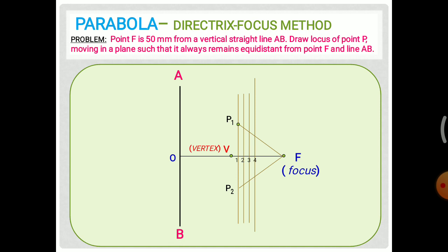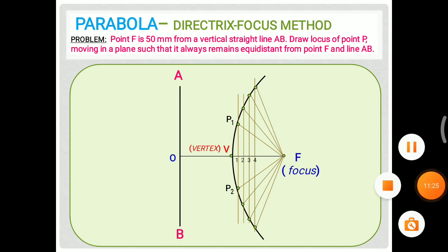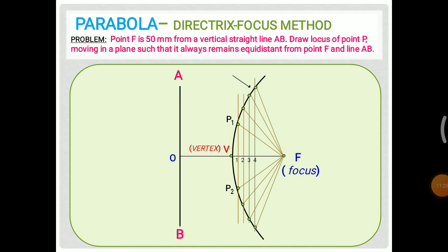Name these points P1 and P2. Then take O2 as length and F as center, draw an arc on the second vertical line, and name it P3 and P4. Draw it for the remaining points also. You may take 10mm, 7mm, 8mm of your own choice for the spacing. The same process is done for the next points, and the curve obtained passes through vertex V — this is the required parabola line.